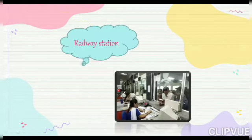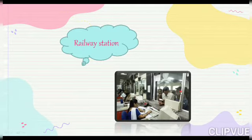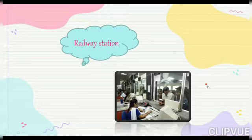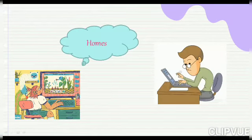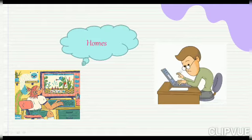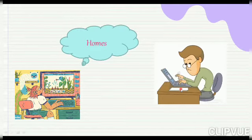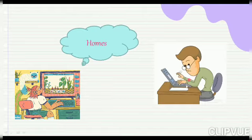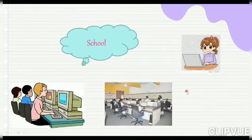You can see in the picture how a queue of people are at the railway station, using the computer to print and book their tickets. At home, you can see a kid playing a game on the computer, and another kid using the computer for study.